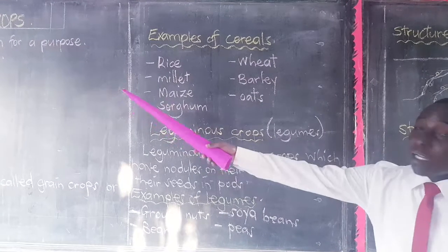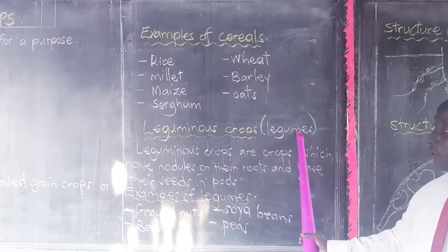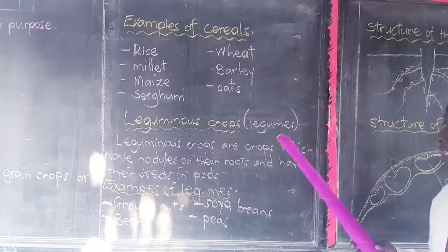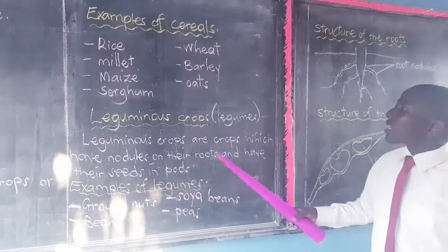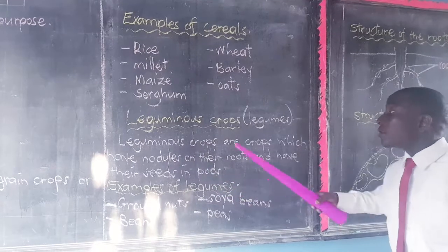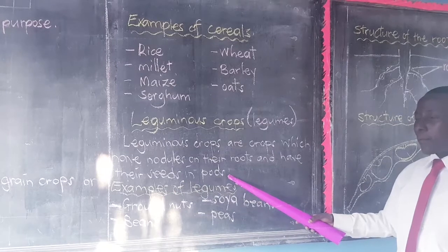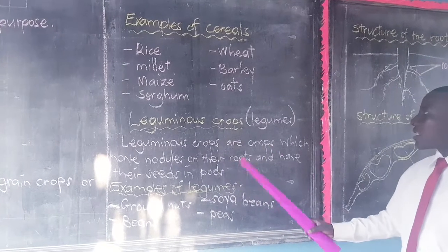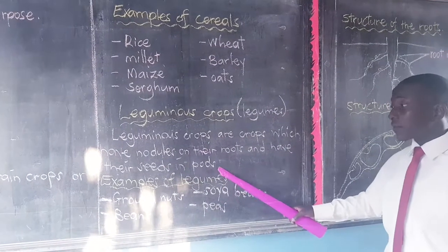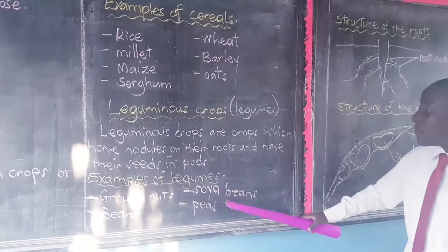Number two of the types of crops — let us look at leguminous crops. I told you they are also called legumes, don't get lost. These leguminous crops we defined in EP3: leguminous crops are crops which have nodules on their roots and they have their seeds in the pods. Examples include groundnuts, beans, soya beans and peas.